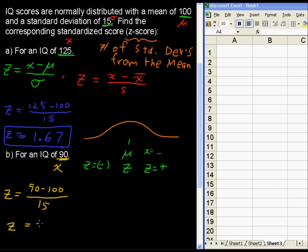So z equals negative 0.67, I should say, is approximately equal to negative 0.67.